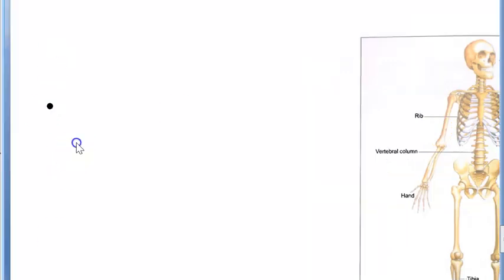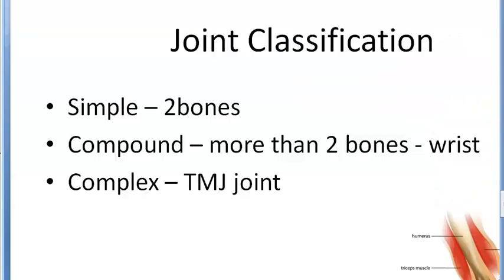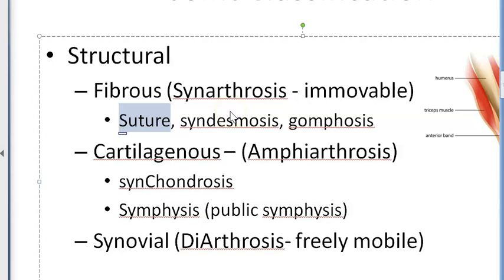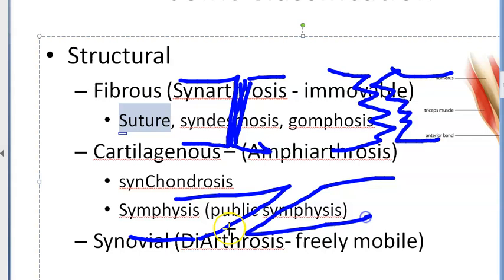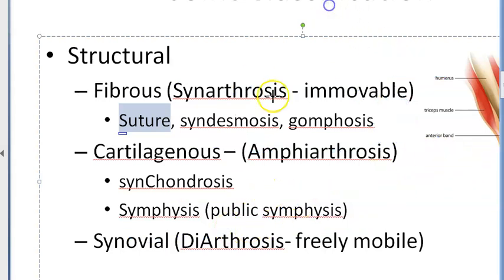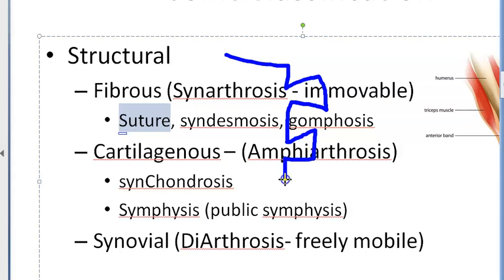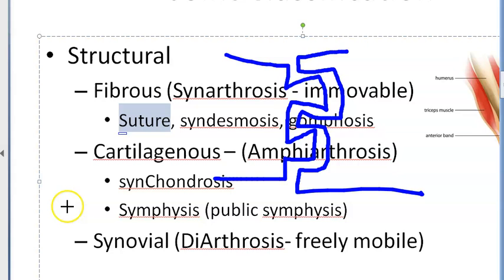There are some other terminologies you should know. In sutures there are many types. You have plain sutures, serrate sutures, squamous sutures, and denticulate sutures. We are talking about sutures here - see there is a plain suture, between two things there will just be a plain. Then you can have a serrate suture - this is what we see in the skull. Then you can see a squamous type of suture. Then you have denticulate suture - something like this. So many types of sutures are there.